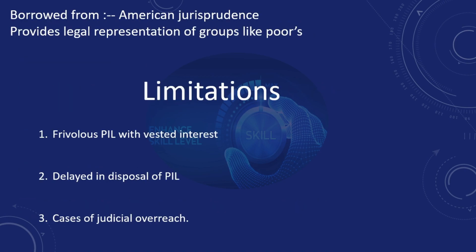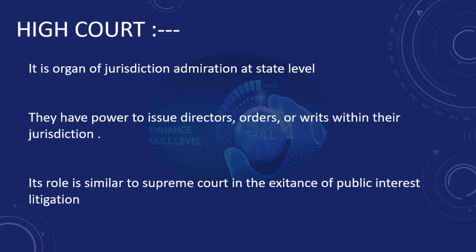Some limitations of PIL include many litigations filed as frivolous PILs with vested interests, delays in disposal of PIL cases, and cases of judicial overreach which is not good for governance. Regarding High Courts, they are the organs of jurisdiction administration at the state level and have powers to issue directions, orders, or writs within their jurisdiction. Their role is almost similar to the Supreme Court in the context of public interest litigation. In the next part, we will cover the independence and impartiality of the Indian judiciary, which is under Article 50.